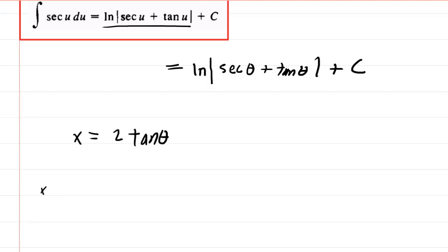And what you're going to need to do here to get theta back in terms of x is to draw a right triangle. You probably have seen your professor do this. Now, to draw the right triangle, you first need to divide both sides by the constant. So if you do that, you will see that tangent of theta is equal to x over 2.